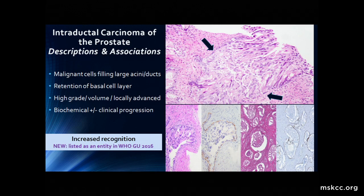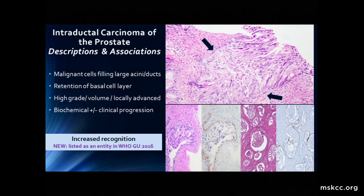There's a lot of argument about whether, if you see this finding in a biopsy alone, you should proceed to radical therapy immediately versus search for invasive carcinoma, because of the near inevitable association in radical prostatectomy with high-grade, high-volume, and locally advanced disease. However, there is very little biopsy data on this. The one study on 3+3 cancers that also had intraductal carcinoma is a collection of Dr. Epstein's consult cases over the past 15 years. The question is, because of these associations, should we not consider surveillance in those patients and take them to immediate therapy, or re-biopsy them in hopes of finding this nearly invariable high-grade disease? There's still a lot of work to be done in this area.